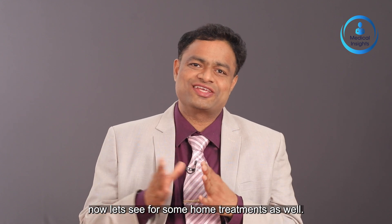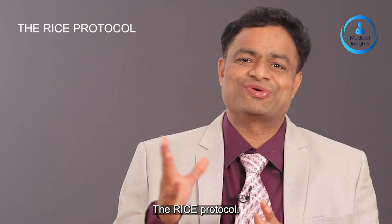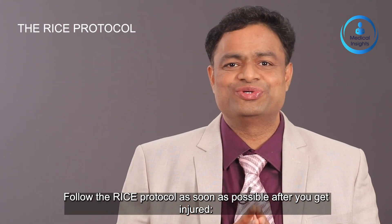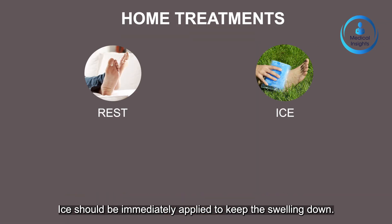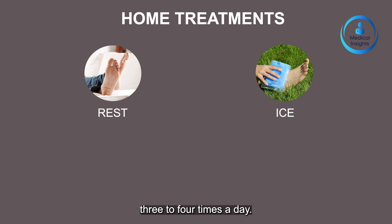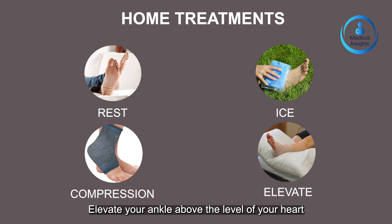For minor sprains, your doctor may recommend simple home treatment — the RICE protocol. Follow the RICE protocol as soon as possible after injury. Rest your ankle by not walking on it. Ice should be immediately applied to keep the swelling down; it can be used for 20 to 30 minutes, 3 to 4 times a day. Do not apply ice directly to skin. Compression dressings, bandages or ice wraps will help immobilize and support your injured ankle. Elevate your ankle above the level of your heart as often as possible during the first 48 hours.